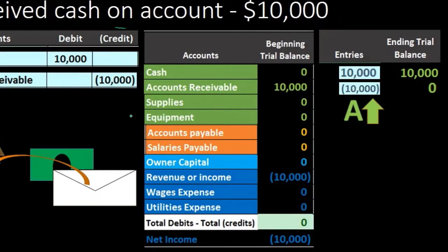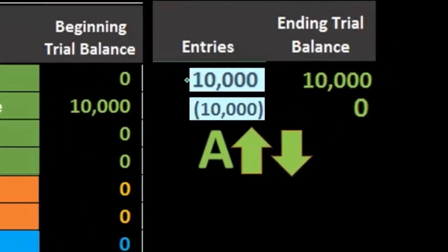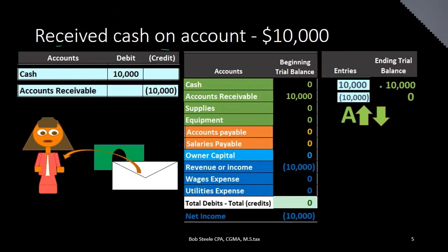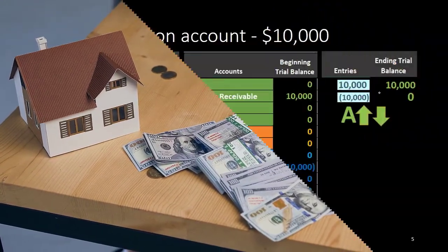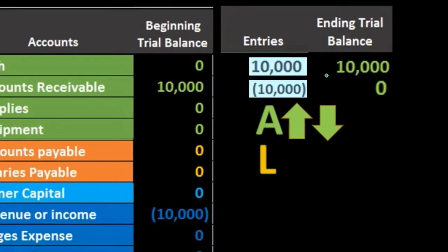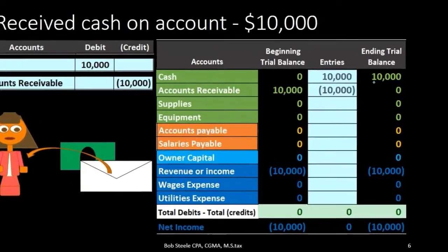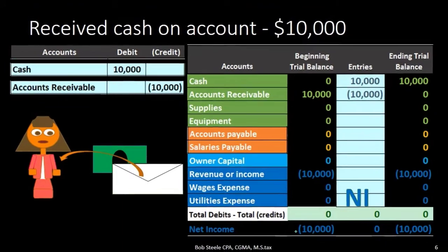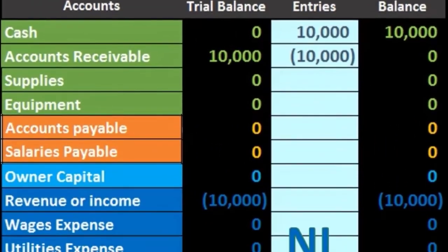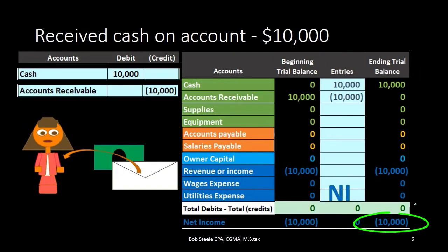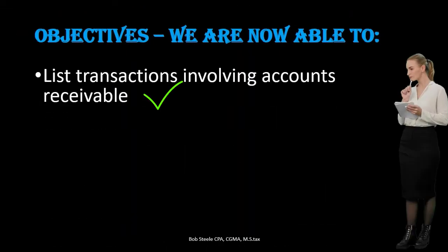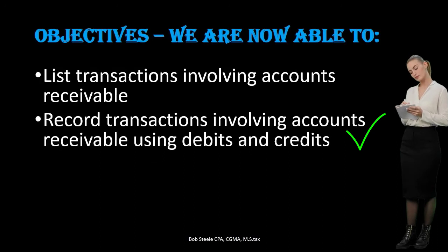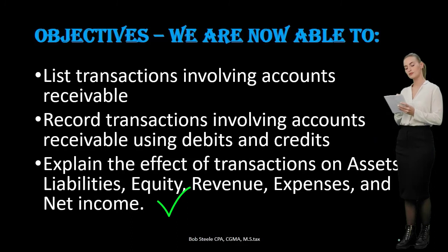The effect on the accounting equation: assets going up, however assets also going down — one asset increasing and one asset decreasing. In essence, we're getting a better asset and losing the worse asset. We're losing the fact that people owe us money and gaining the fact that we now have the money. There's no effect on liabilities and no effect on equity. No effect on net income — note that although we got the cash now, we already recorded the net income in the past. Therefore in this current transaction, nothing is happening to net income, and we remain at $10,000 representing net income calculated as revenue minus expenses. We are now able to list, record, and explain the effect of transactions involving accounts receivable using debits and credits on assets, liabilities, equity, revenue, expenses, and net income.